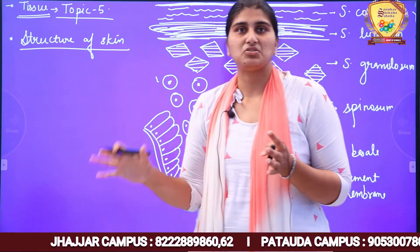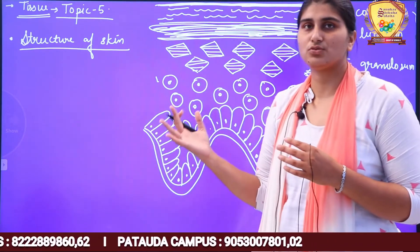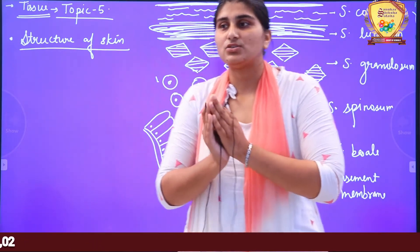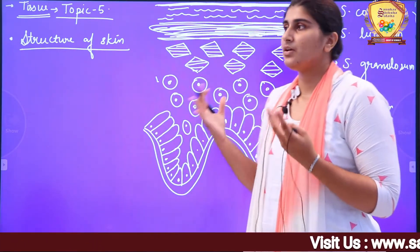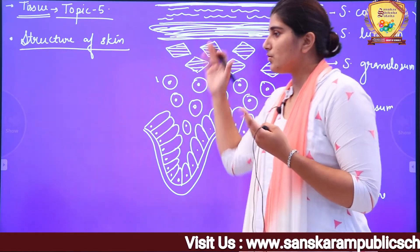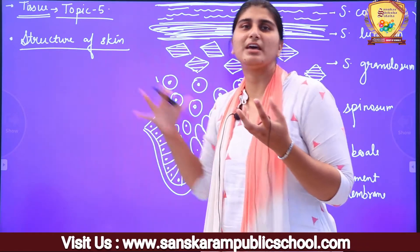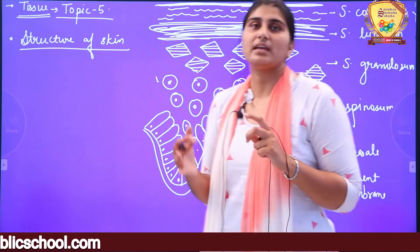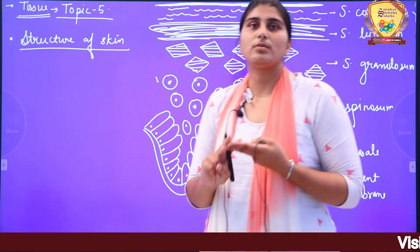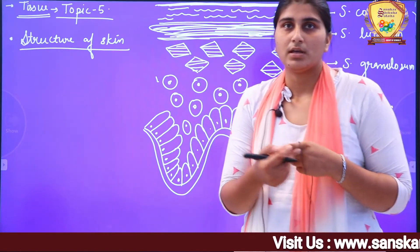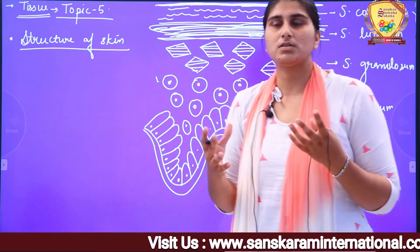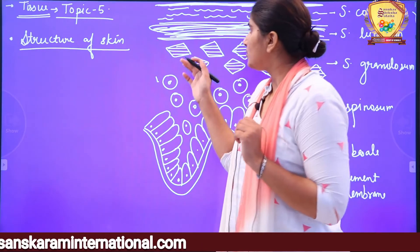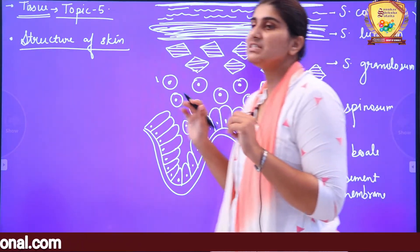In the tissue chapter, we have completed plant tissue. In the last class, we started animal tissue and completed epithelial tissue. Today we will study a variation of it — a special type of epithelial tissue which is skin. After that, we will discuss muscular tissue. So two animal tissues will be completed today — epithelial and muscular. Two will remain: connective and nervous tissue. Most probably in 4-5 more lectures, our chapter will be complete.